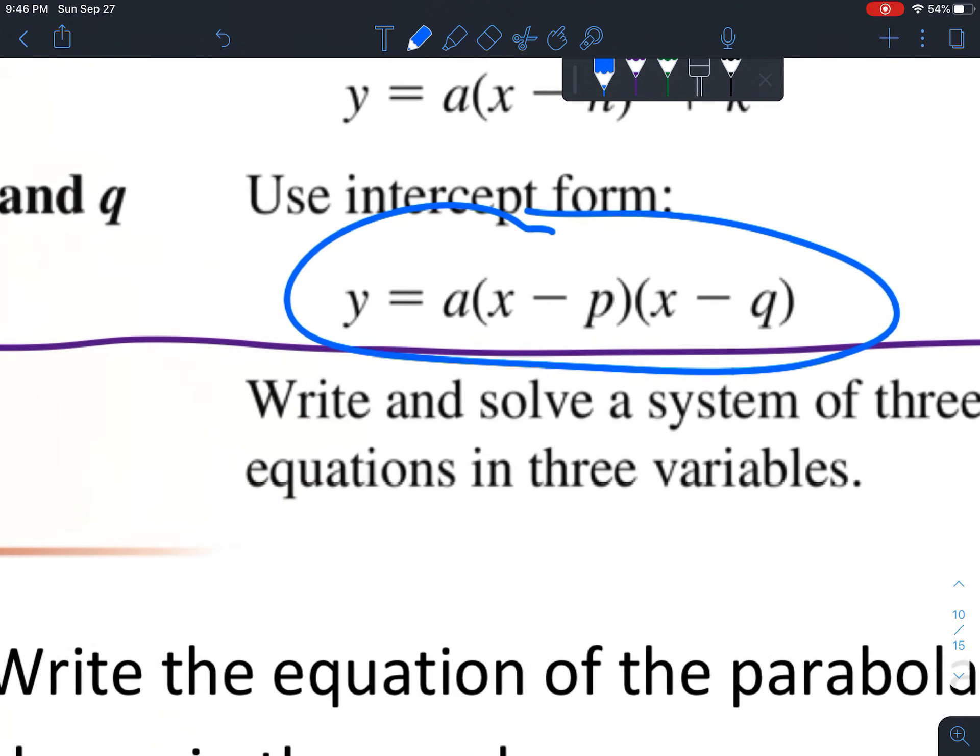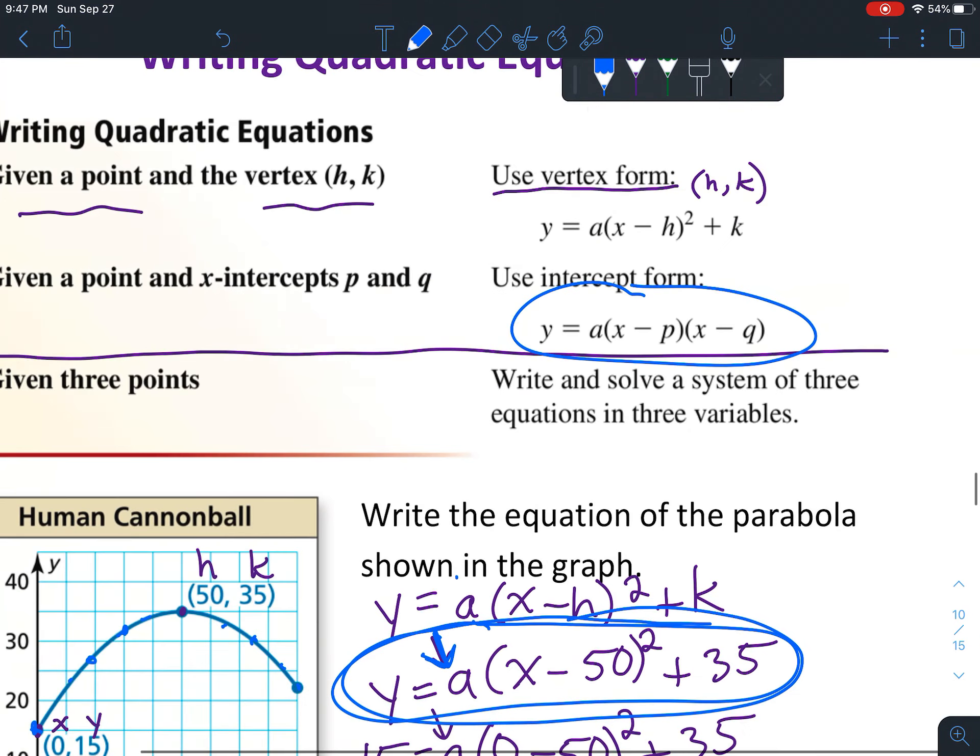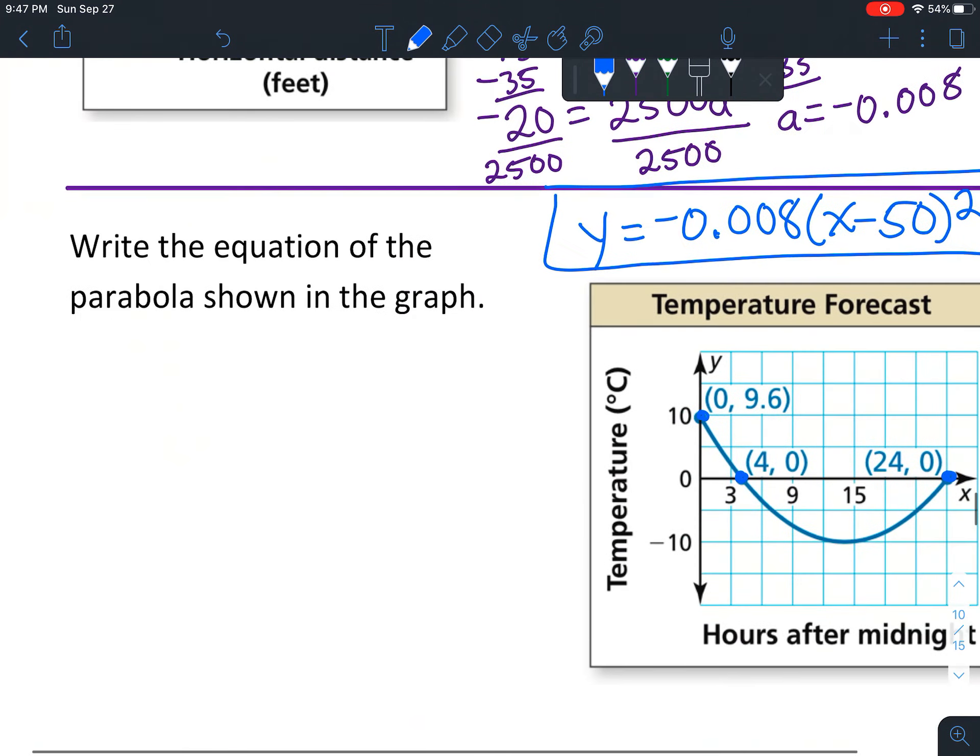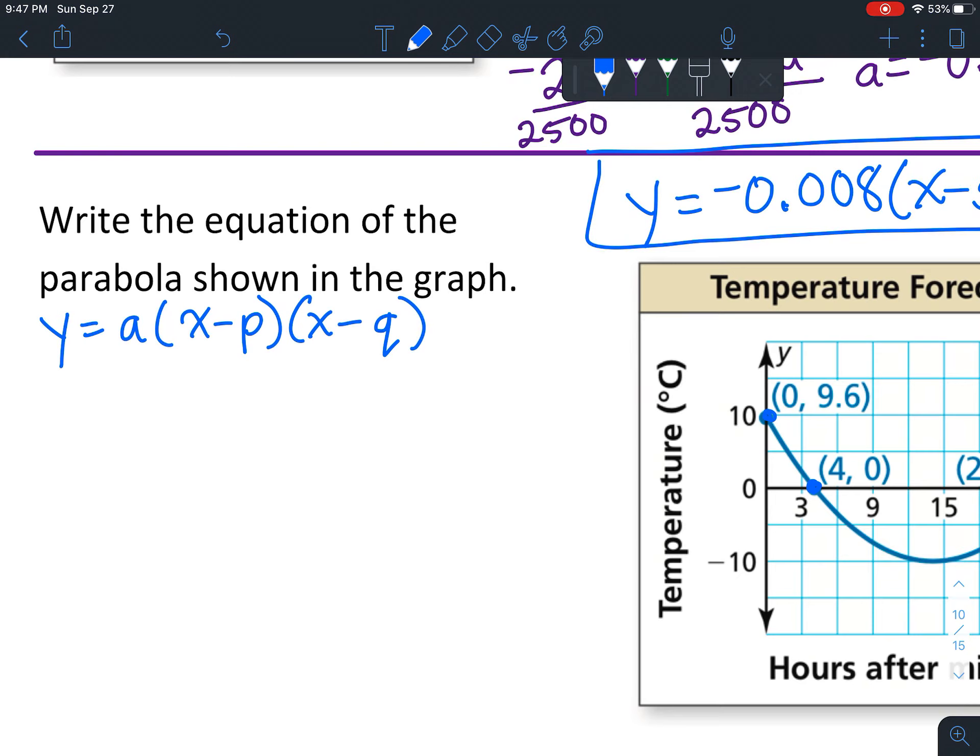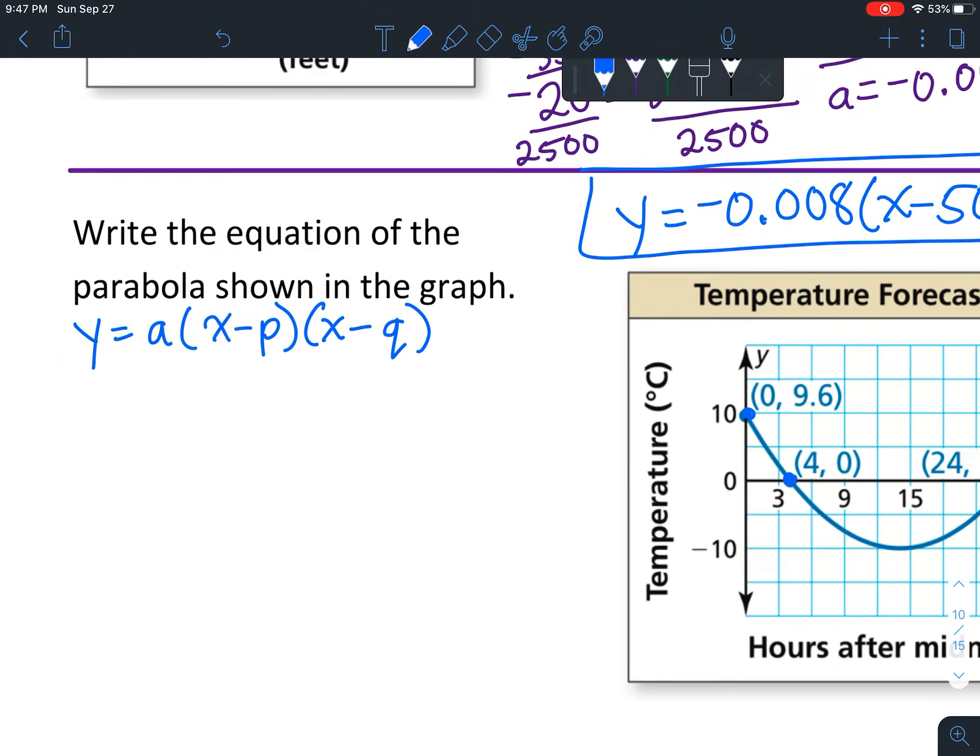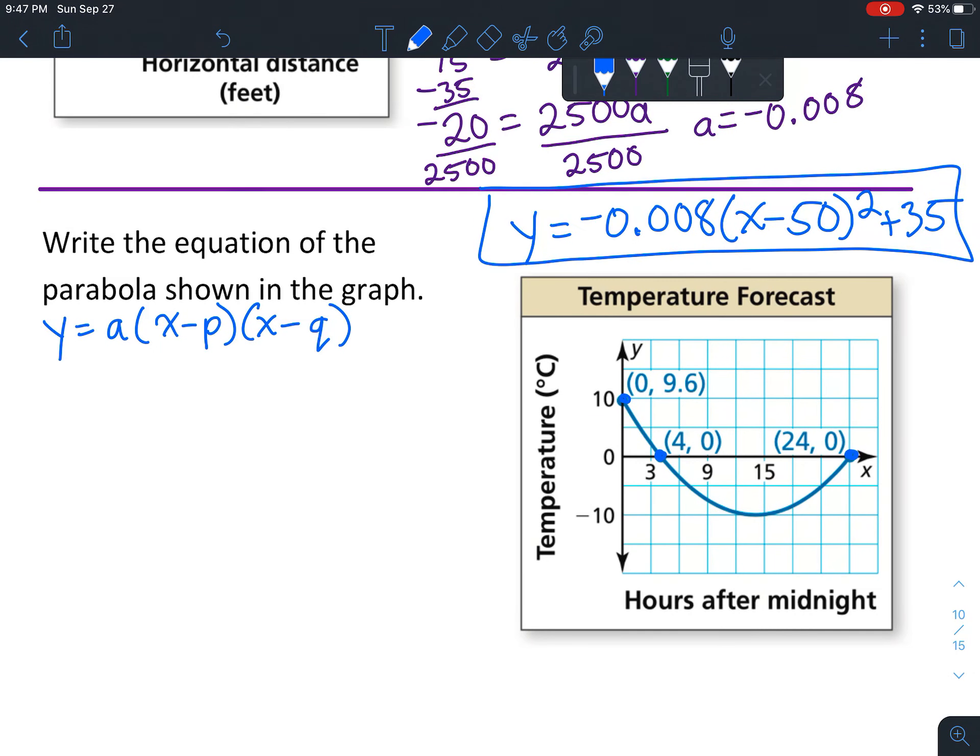We're going to start with this equation: y = a(x - p)(x - q). Similar to last time, even though we're using a different form of our equation, we're going to plug in things we know. P and Q are these numbers - 4 and 24, those are our x-intercepts.